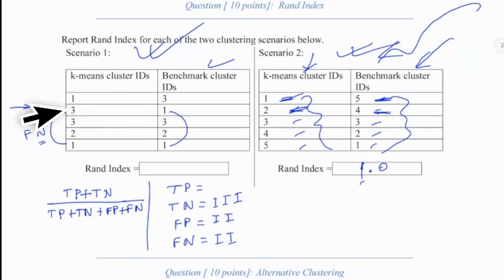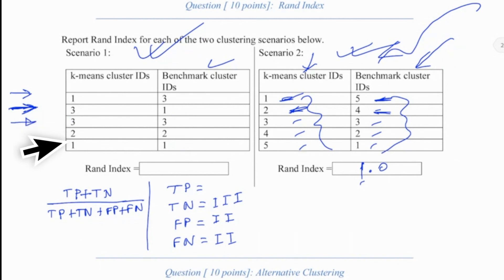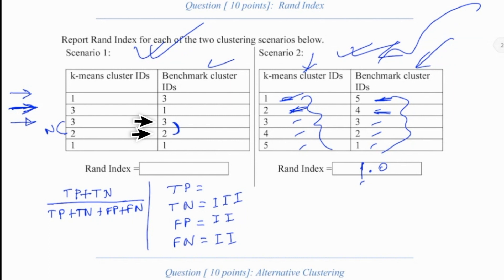Now, notice that we are done with row 1. We will deal with the next row and all pairs it forms with the rows that appear after it. This is a negative pair, and we see an agreement on the benchmark side as well — it says that this pair should be in two different clusters. So this is a true negative.